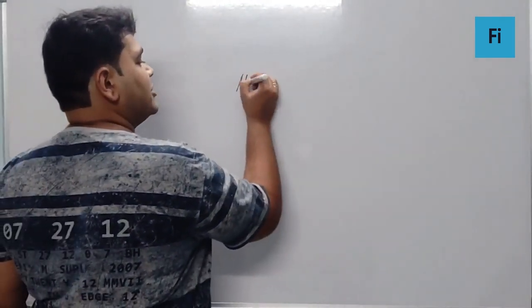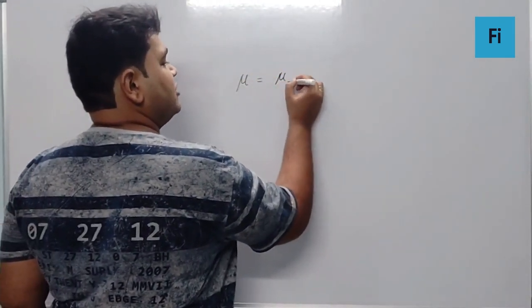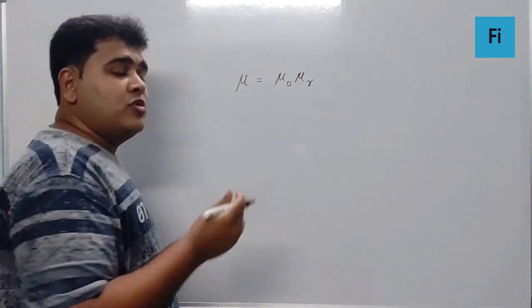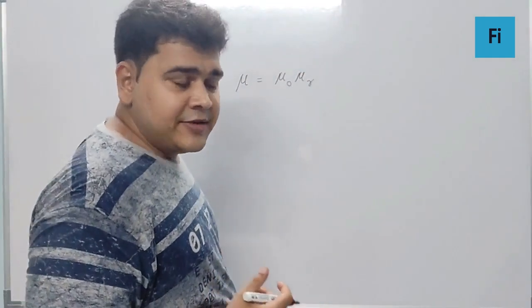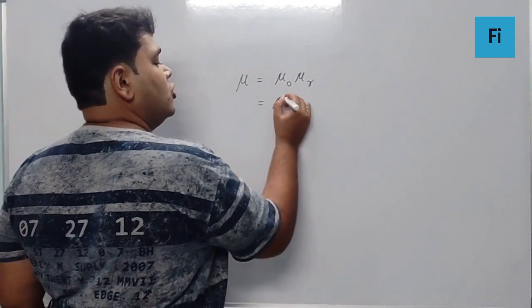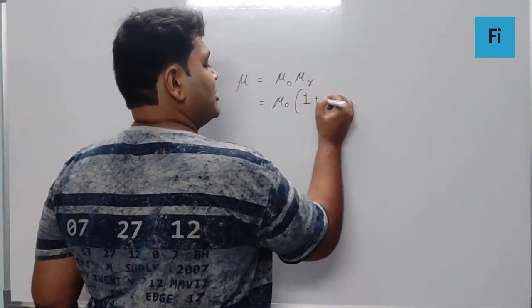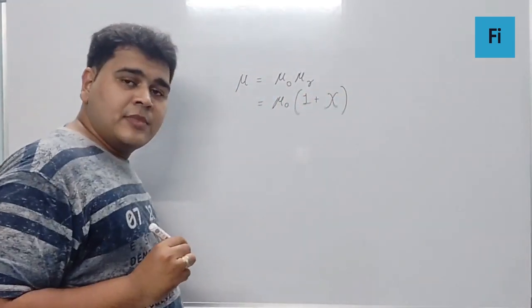We know permeability of a medium is μ₀ times μᵣ, where μᵣ is the relative permeability. Now μᵣ can be written as 1 plus susceptibility, correct?